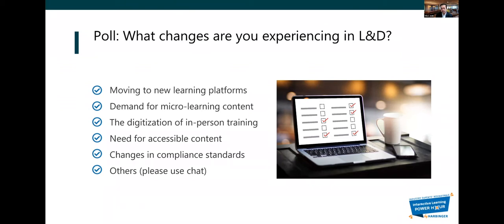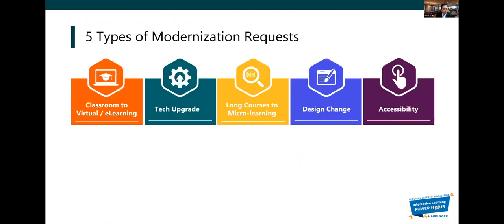What's common in all these changes is that it affects the way you design and develop content. At Harbinger, we help hundreds of enterprises, publishers, academic institutions, and nonprofits in designing and implementing their content modernization strategies. We keep receiving customer requests for proposal all the time, and when we analyze those requests, we see that they fall into one of five types of modernization requests.